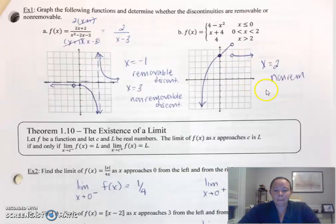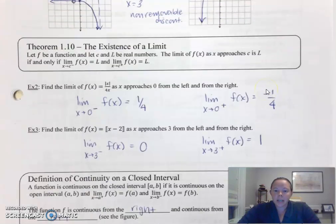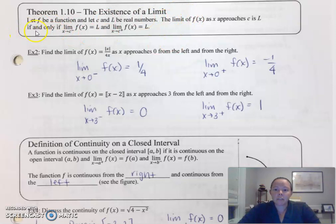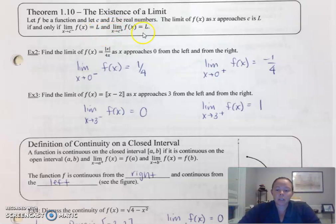The existence of a limit — we've actually already been talking about this. The limit from the left is the same as the limit from the right, and notice there's an if and only if statement there. The limit of f of x as x approaches c is L, if and only if the limit from the left and the limit from the right both also equal L. And we've actually been doing that a lot already.